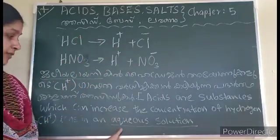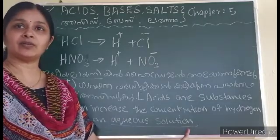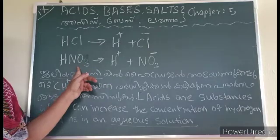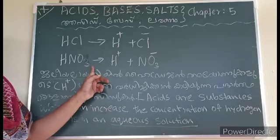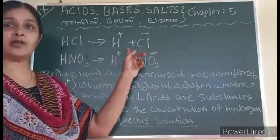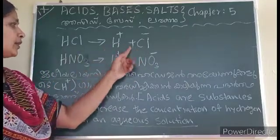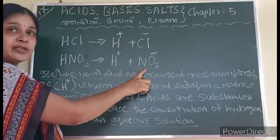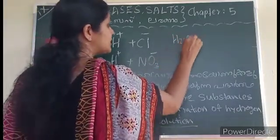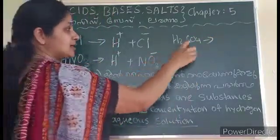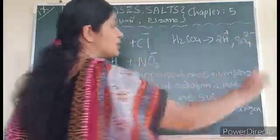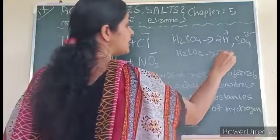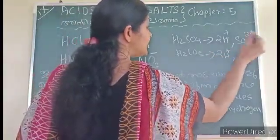Acids form an aqueous solution. In aqueous solution, hydrochloric acid dissociates into H+ ion and Cl− ion. Nitric acid (HNO3) gives H+ ion and NO3− ion. Sulfuric acid dissociates in water. Carbonic acid (H2CO3) gives H+ ion and CO3− ion.